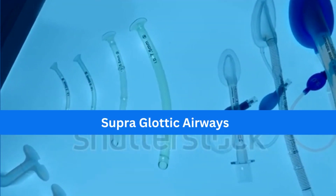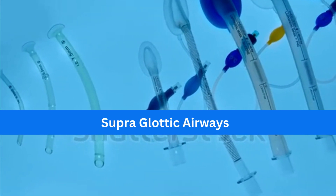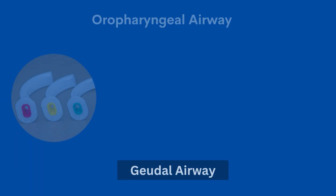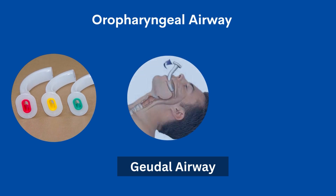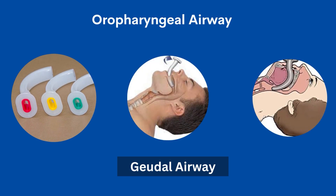Supraglottic airways are divided into many categories; here we will discuss those that are quite common. First, we have the oropharyngeal airway, commonly known as a Guedel. It maintains airway patency by keeping the mouth open and preventing the tongue from falling backward. It may not be tolerated by a semi-conscious patient as it can induce discomfort and vomiting.